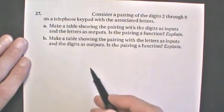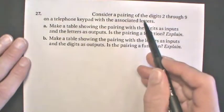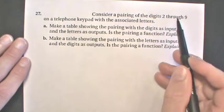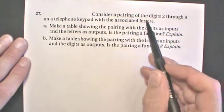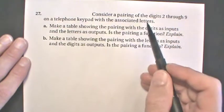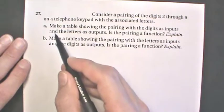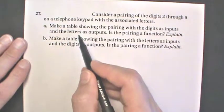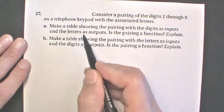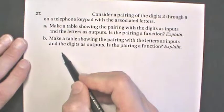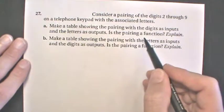Problem 27 says that we have the digits 2 through 9 on a telephone keypad and it wants to associate that with the letters. So for problem A, we want to make a table showing the pairing of the digits as inputs and the letters as outputs. And they ask us, is this a function.